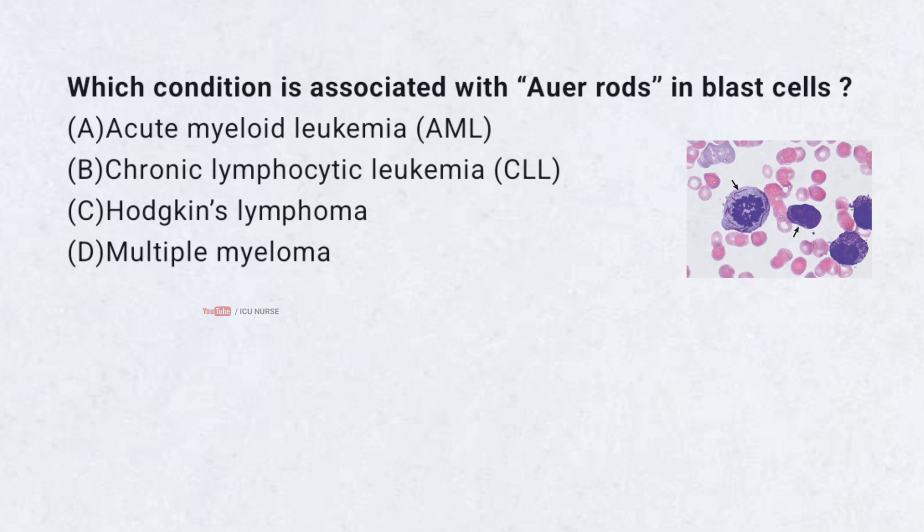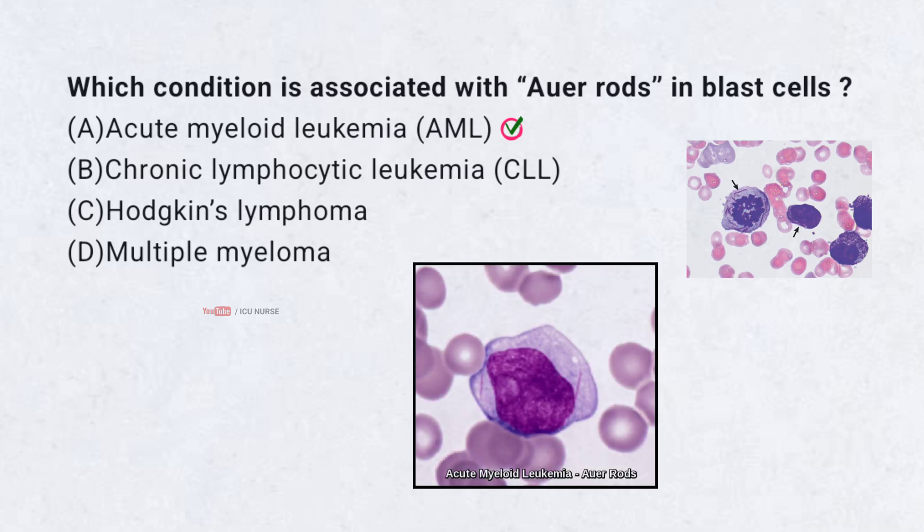Which condition is associated with Auer rods in blast cells? A. Acute myeloid leukemia (AML), B. Chronic lymphocytic leukemia, C. Hodgkin's lymphoma, D. Multiple myeloma. Correct answer: A. Acute myeloid leukemia (AML). Auer rods — needle-like inclusions — are seen in myeloblasts in acute myeloid leukemia.